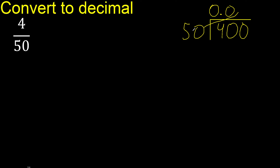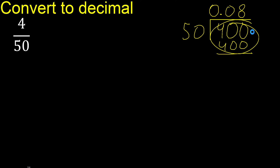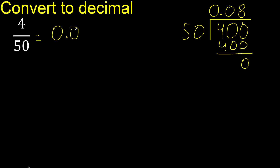50 multiplied by 9 is 450 — excessive. Therefore 50 multiplied by 8 is 400. Subtract: result is 0. Finish, because there is no number that goes down. Therefore, finish.